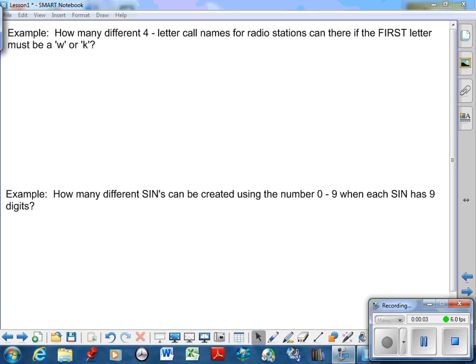I'm going to apply the fundamental counting principle for the next couple examples. How many different four-letter call names for radio stations can there be if the first letter must be a W or a K? So we have four different call letters: first, second, third, and fourth.